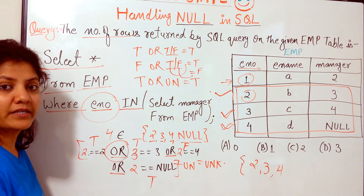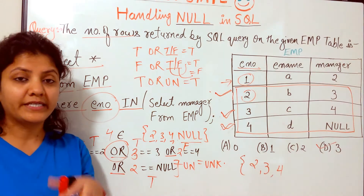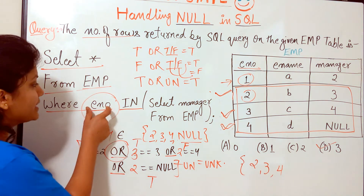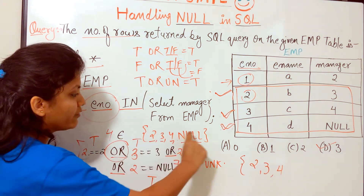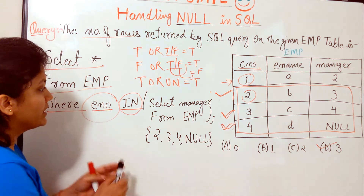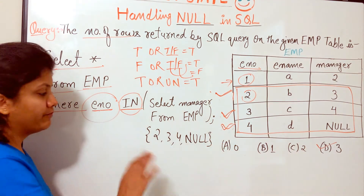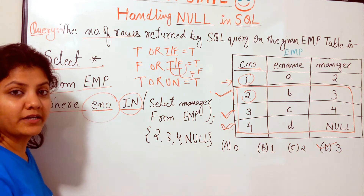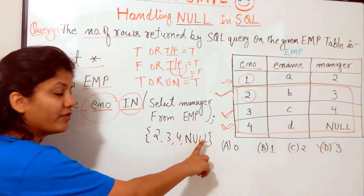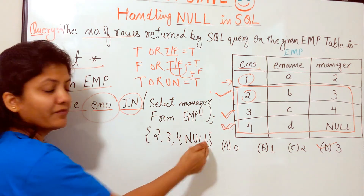The answer is 3 rows returned — option D. To summarize how IN works: the attribute value just needs to match any one value in the set. IN uses the OR operator, so if any single match is found the tuple is selected. Null values in the set do not cause all tuples to be rejected — only unmatched tuples are affected.